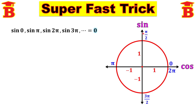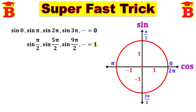The sine value on the positive side: we have pi by 2, and after one rotation 5 pi by 2, and again 9 pi by 2, etc. For all these, the value is plus 1. So positive side angles are pi by 2, 5 pi by 2, 9 pi by 2, etc. That is: sine(pi/2) = 1, sine(5pi/2) = 1, sine(9pi/2) = 1, etc.